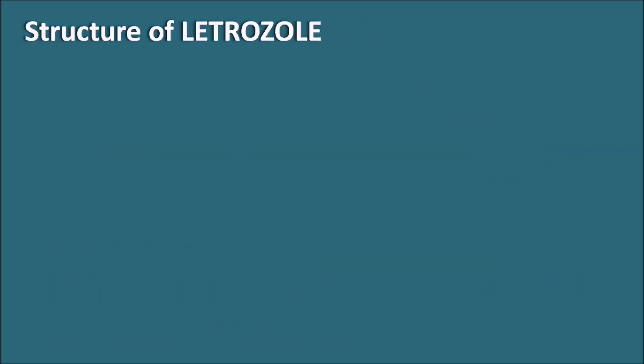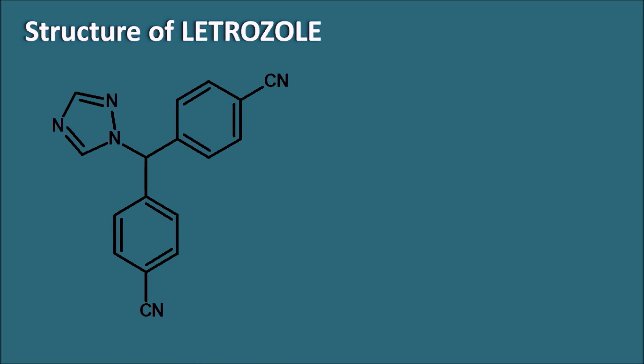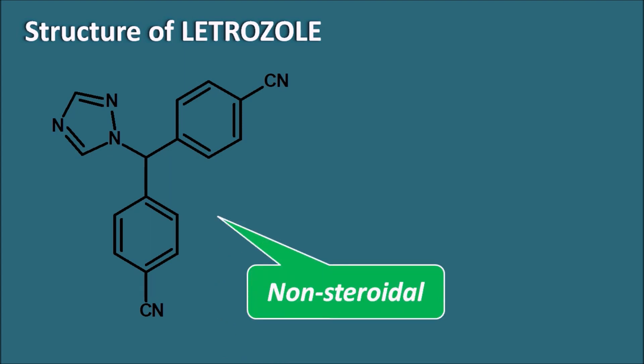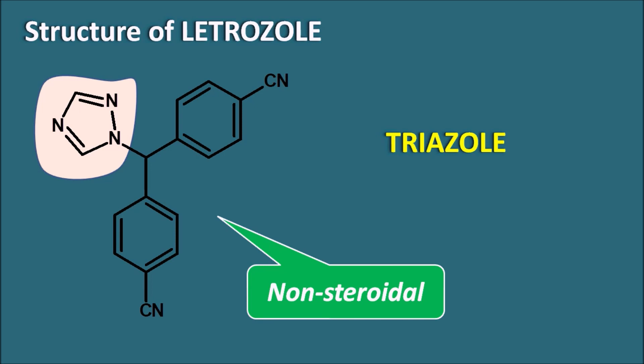First let us see the structure of Letrozole. Letrozole has a structure that does not have any steroidal nucleus, so Letrozole is a non-steroidal drug. This drug belongs to the category of aromatase inhibitors. Among aromatase inhibitors we have Exemestane, which is a steroidal aromatase inhibitor. But Letrozole is a non-steroidal aromatase inhibitor, therefore it lacks the steroidal side effects of Exemestane. Letrozole contains a heterocyclic ring system with three nitrogens and a five-membered ring — the triazole ring. So Letrozole is a triazole-containing aromatase inhibitor.